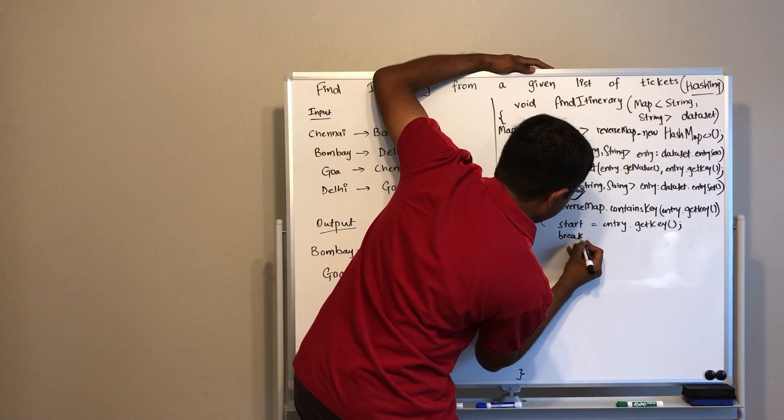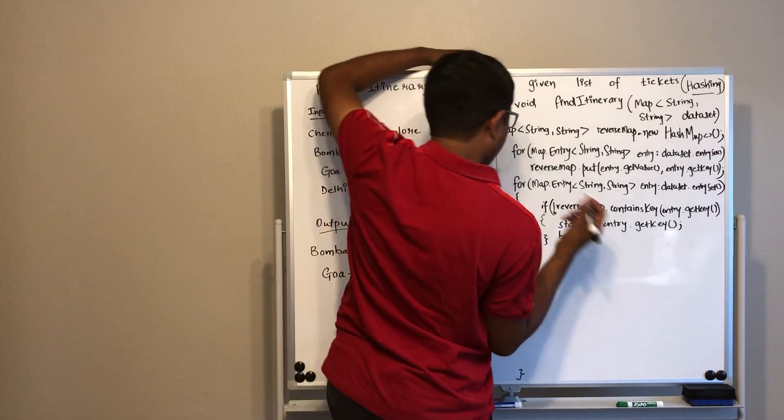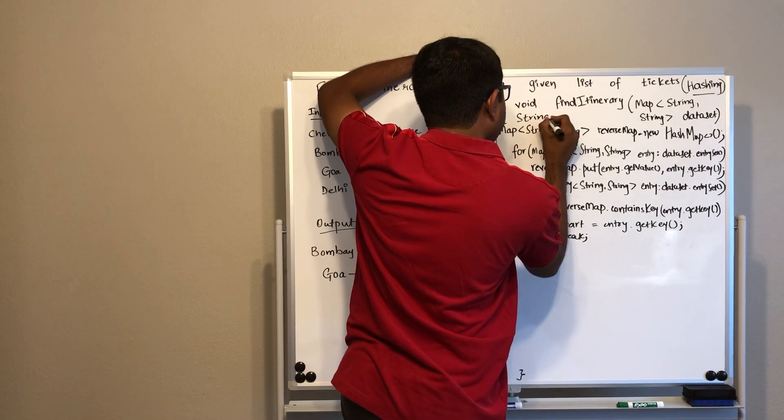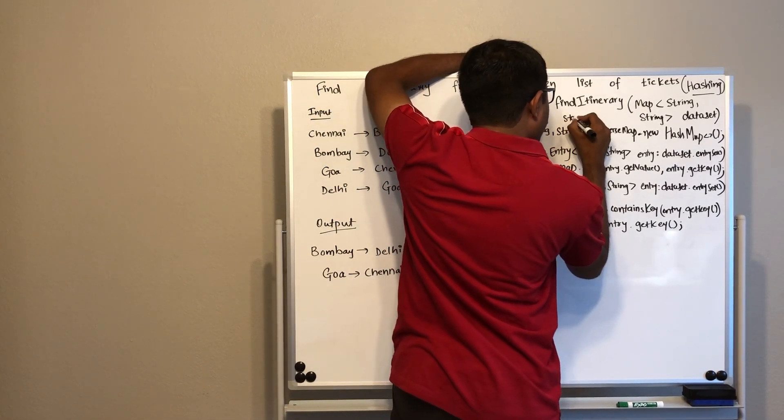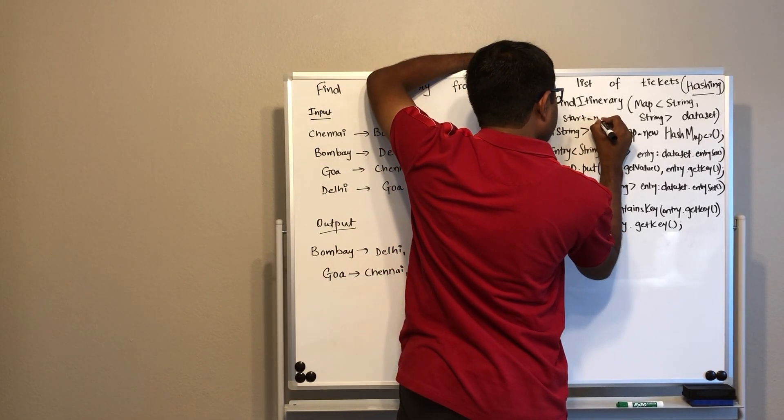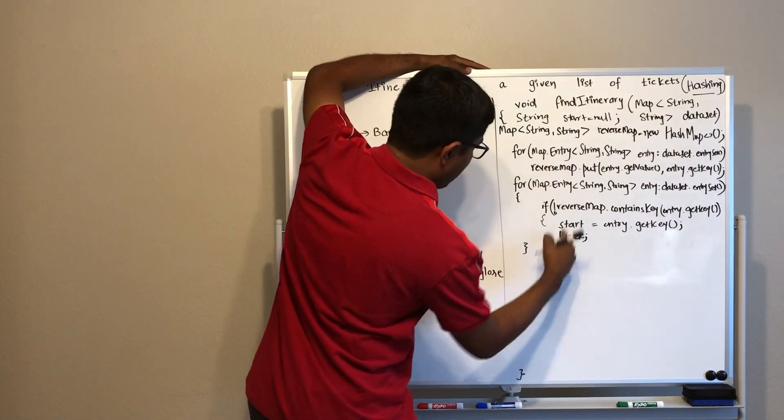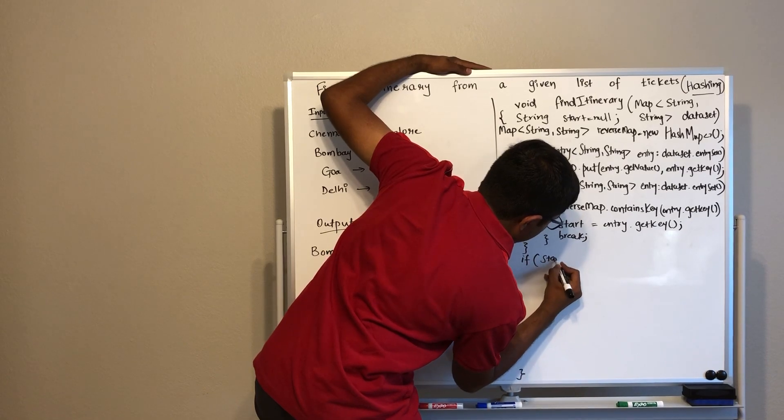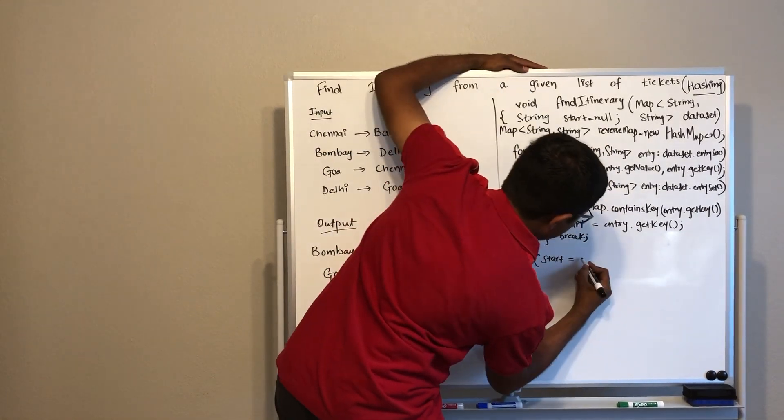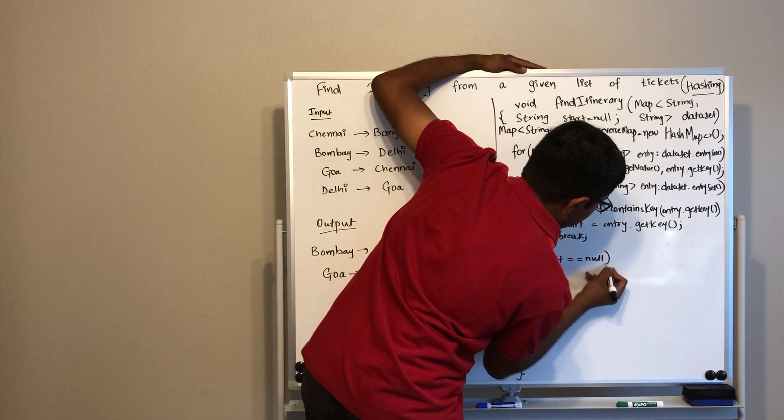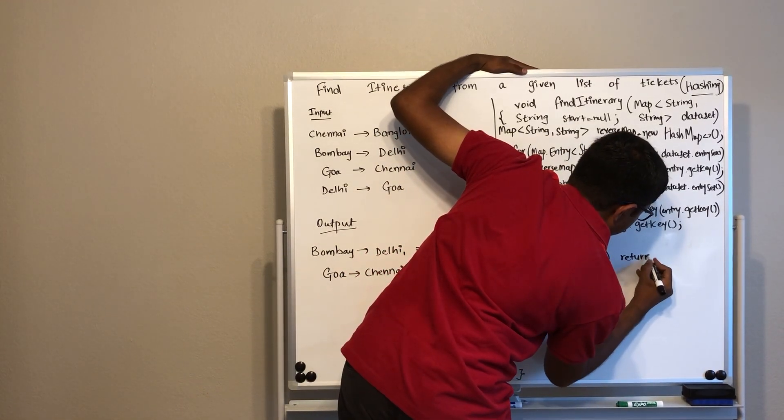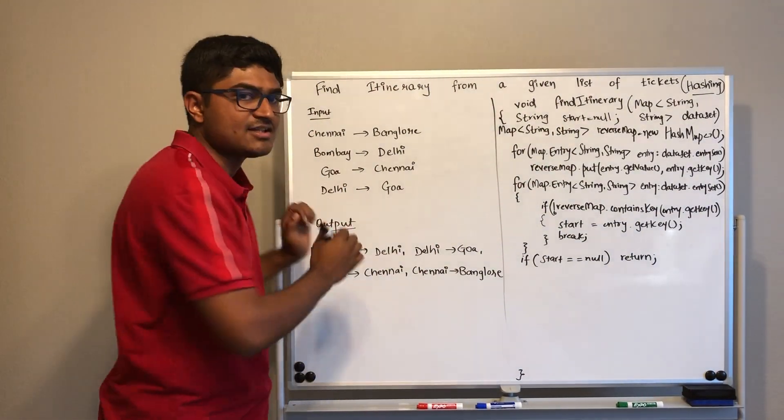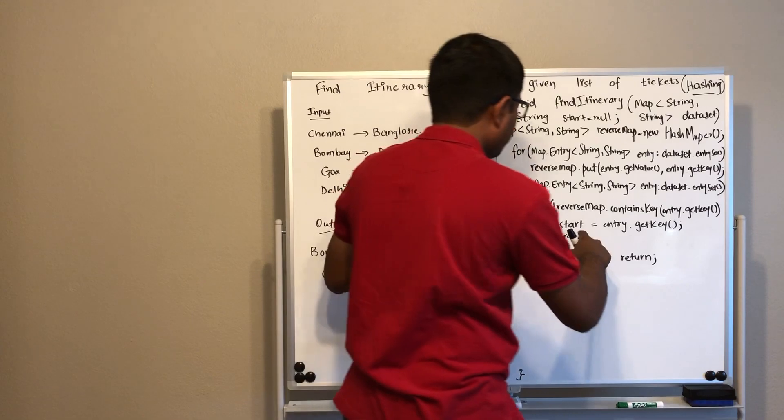And we will break out of this loop. We will define this start as null. After this, if our string start is still null, that means there is no path, there is no starting point from this list of tickets. So now that we have the starting point,